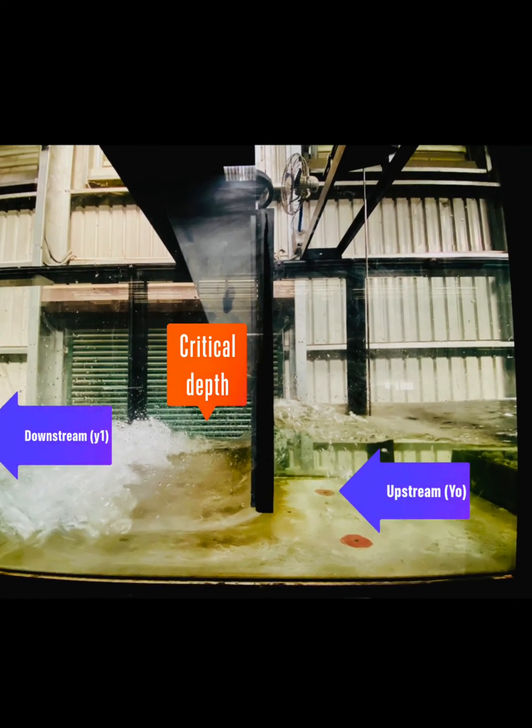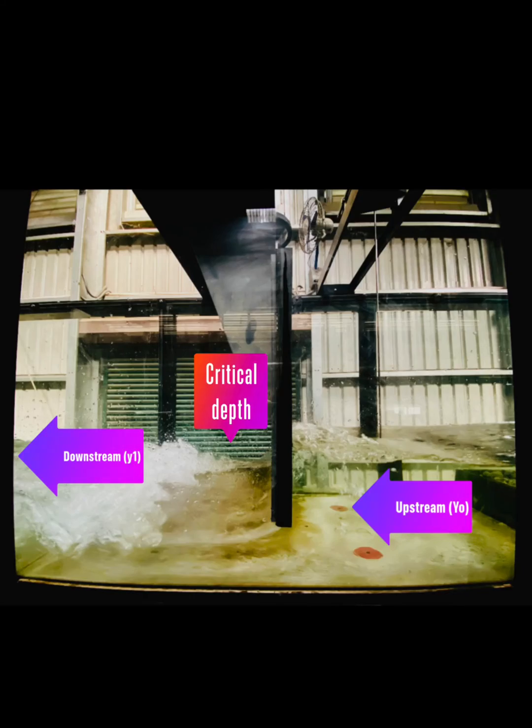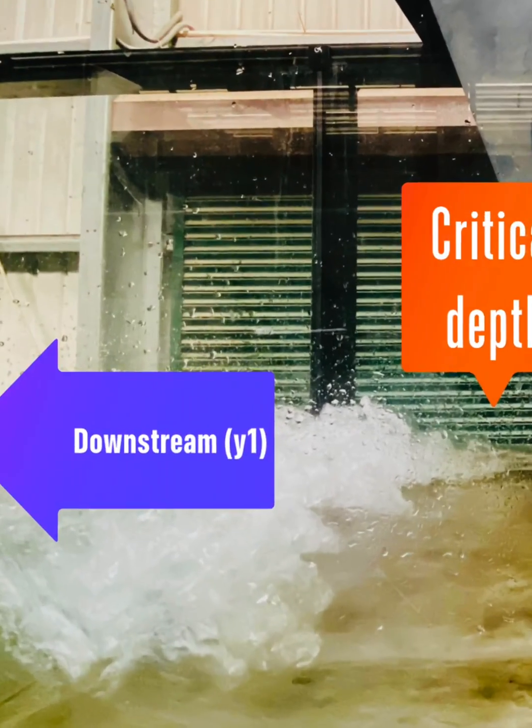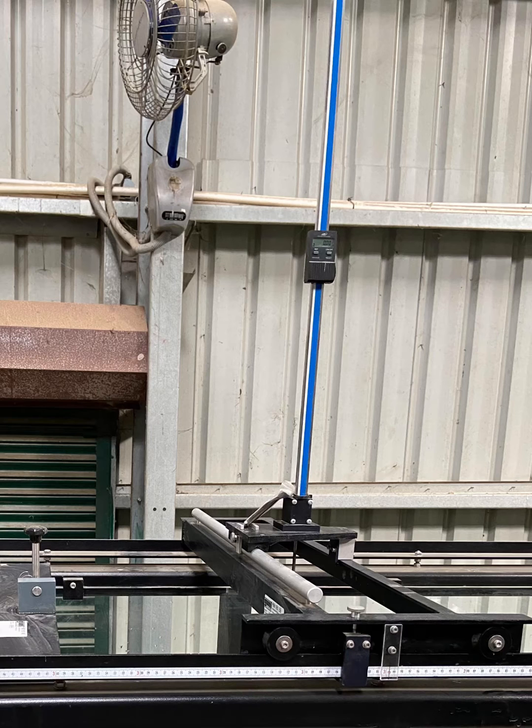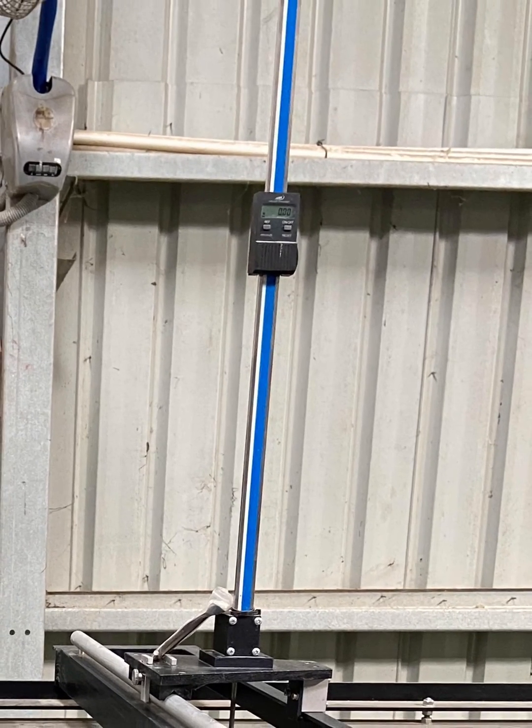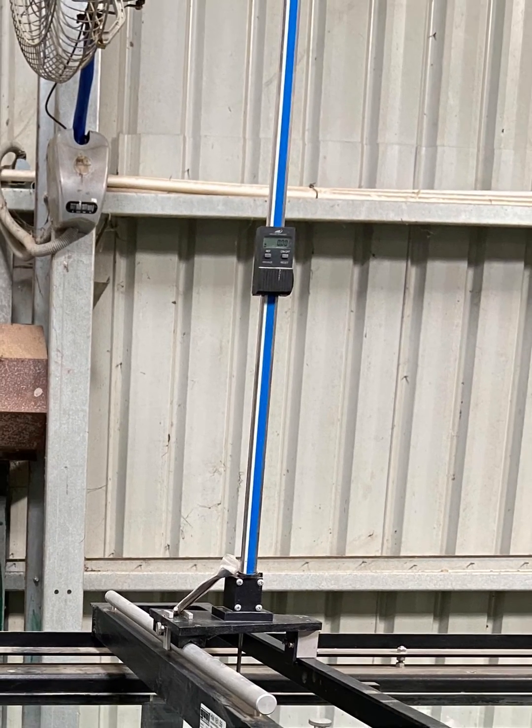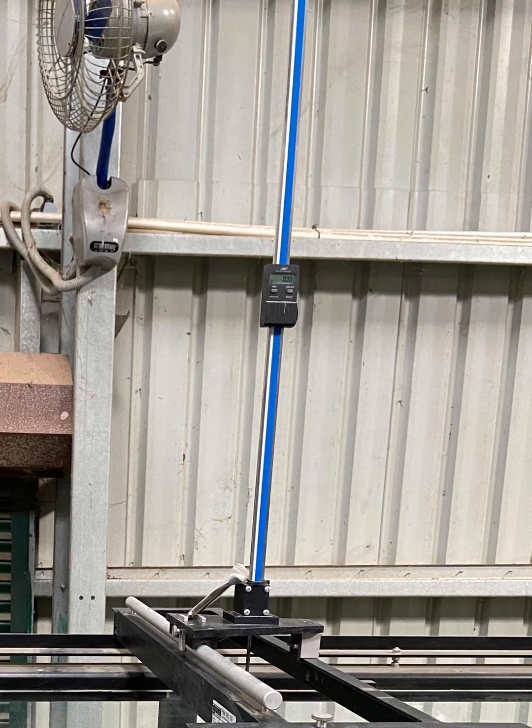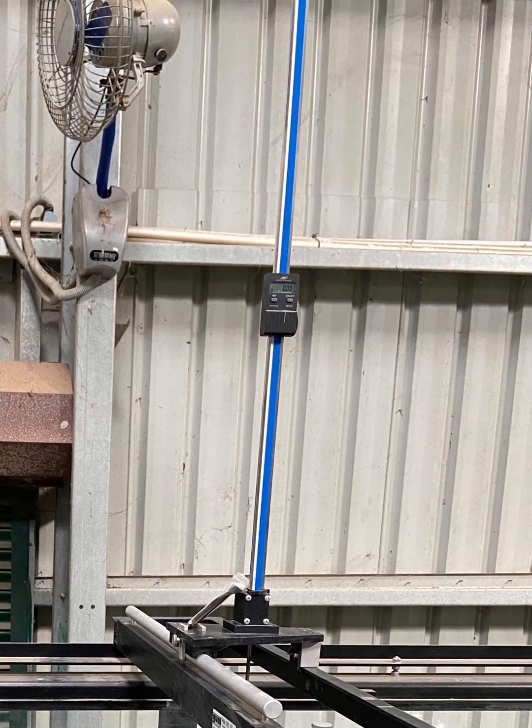This is the sluice gate with the upstream section, critical depth location, and downstream section. This device is called a digital level gauge, which is used for measuring the height of water. We'll be using this device for finding the upstream head, downstream head, and critical depth.